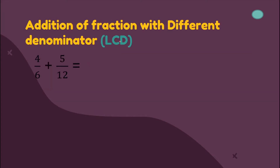For this one, if we have different denominators, the first thing we are going to do is find their LCD or least common denominator. The least common denominator for six and twelve — we're going to find the LCD using the LCM. The multiples of six are 6, 12. The multiples of twelve are 12, 24. The LCM is 12, and that will also be their new denominator or LCD.